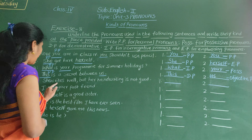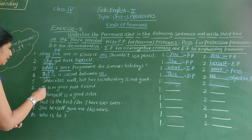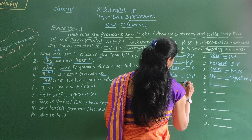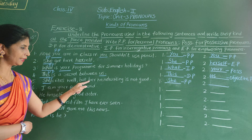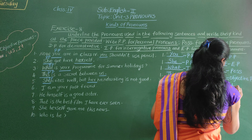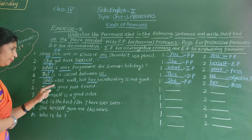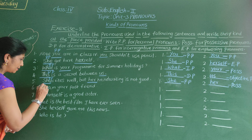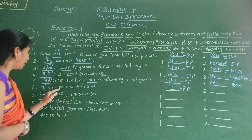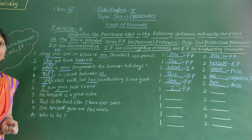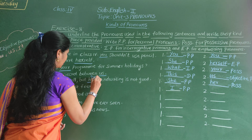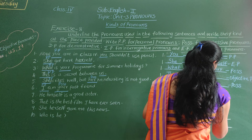Next: She lives well, but her vanity is not good. 'She' is a personal pronoun. 'Her' is a possessive pronoun. Next: I am your last friend. 'I' is a personal pronoun. 'Your' is a possessive pronoun.